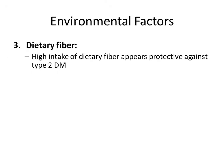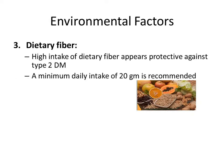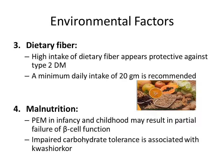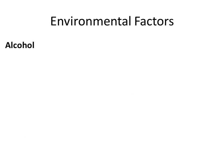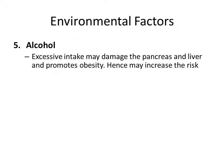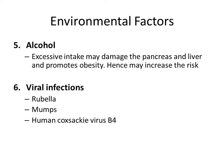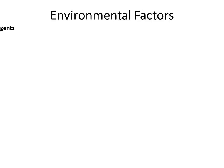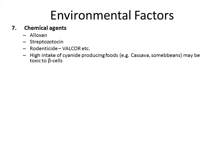Dietary fiber: a high intake appears to decrease the risk of diabetes mellitus. A minimum daily intake of 20 grams has been recommended. Malnutrition: protein-energy malnutrition in infancy may result in partial failure of beta cell function, and some cases of kwashiorkor have impaired carbohydrate tolerance. Excessive alcohol intake may damage the pancreas and liver, promotes obesity, and hence increases the risk of diabetes. Certain viral infections like rubella and mumps can destroy beta cells. Certain chemical agents and poisons can also destroy beta cells. Stress, trauma, surgery, or stressful situations can be diabetogenic.